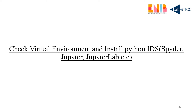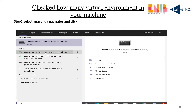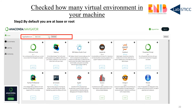The next step is how to check virtual environments and how to install different IDEs such as Spyder, Jupyter, and Jupyter Lab, because you need IDEs to type, run, and process your programs for machine learning and deep learning. Go to your Start button, type Anaconda, and you can see two options: Anaconda Prompt and Anaconda Navigator. This time we will go to Anaconda Navigator. After a few seconds you will see the Navigator window. By default you can see the base or root directory, and you can see the different IDEs.